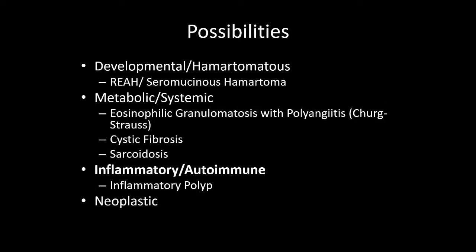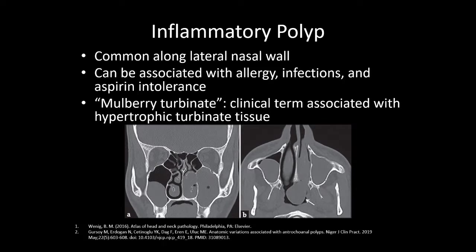Moving on to our inflammatory list: inflammatory polyps are very common, most commonly occurring along the lateral nasal wall, and can be associated with allergies, infections, and aspirin intolerance. A mulberry turbinate is a clinical term associated with hypertrophic turbinate tissue. Our case may represent an inflammatory polyp or a mulberry turbinate.